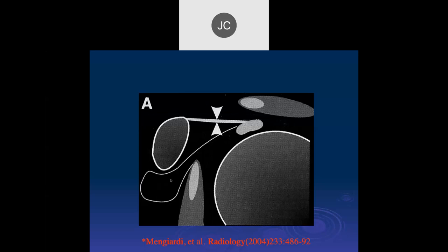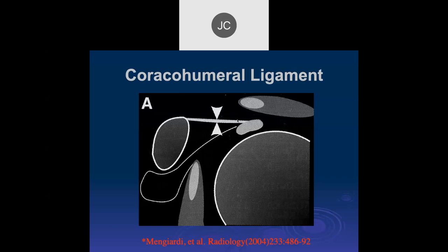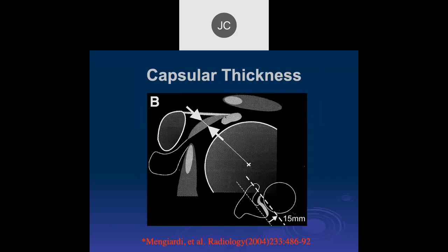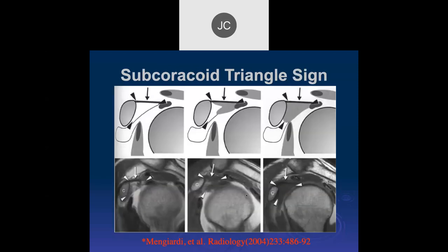The rotator cuff interval includes the subscapularis recess, the coracoid process, the superior margin of the subscap muscle, and the biceps tendon. The coracohumeral ligament comes across in this area. There's a triangle here that should be predominantly fat. You can see a little bit of thickening right along the capsule margin, and on the axial plane it appears as slight thickening. With increasing degrees, it can extend along the coracohumeral ligament and fill the entire triangle with inflammatory tissue.